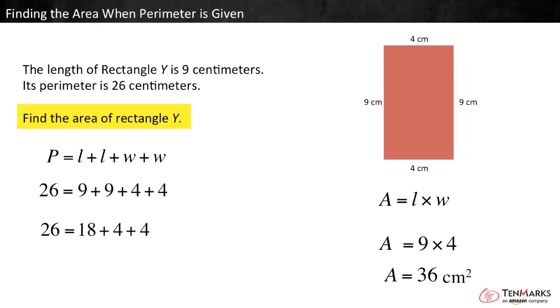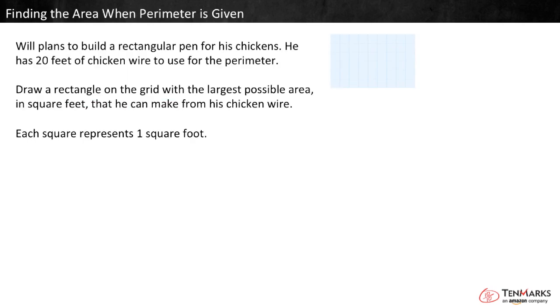Let's use this same strategy to solve a more complex problem. Will plans to build a rectangular pen for his chickens. He has 20 feet of chicken wire to use for the perimeter. Draw a rectangle on the grid with the largest possible area in square feet that he can make from his chicken wire. Each square represents 1 square foot.